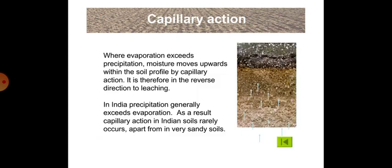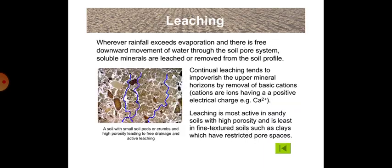Now comes capillary action. Where evaporation exceeds precipitation, moisture moves upwards within the soil profile by capillary action. It is therefore in the reverse direction to leaching. In India, precipitation generally exceeds evaporation, so capillary action in Indian soils rarely occurs, apart from in very sandy soils.